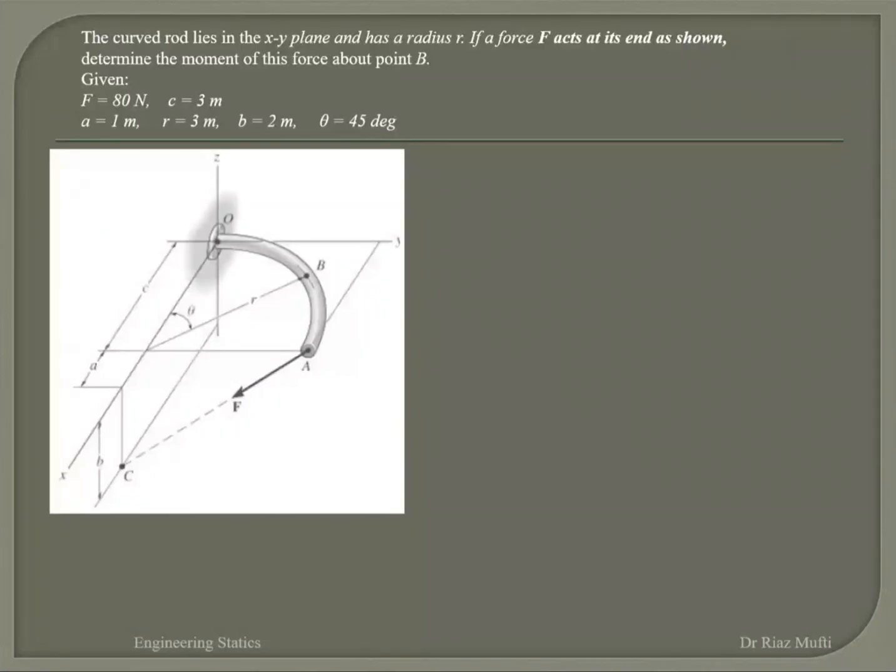Okay, let's look at this one. What we've got here is a curved rod, same curved rod, which lies again in the XY plane and has a radius of R. If a force F acts at its end, determine the moment of this force about point B. That's here.